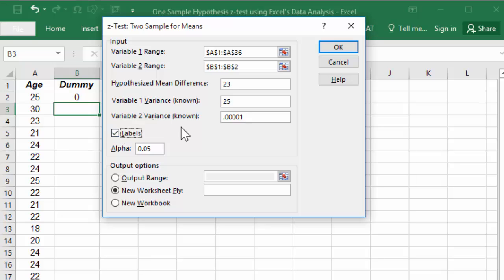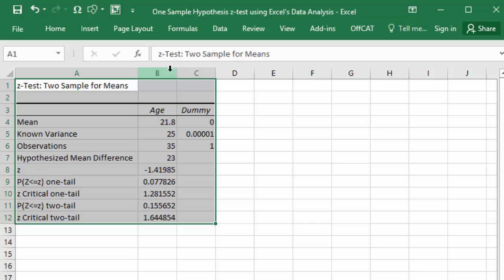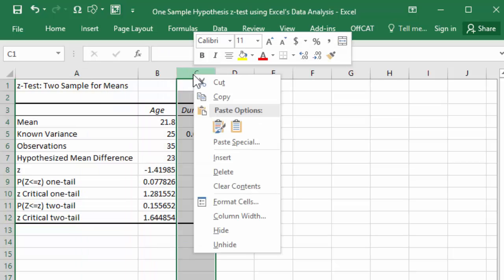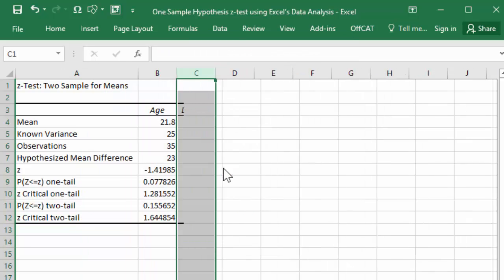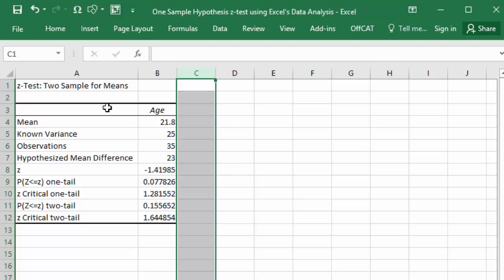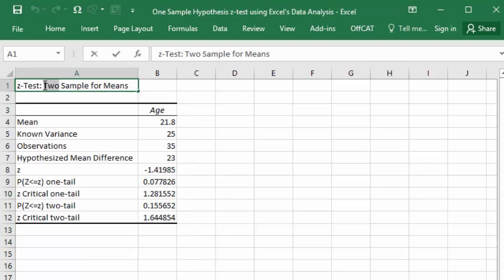I'm going to check labels because I selected the labels. For the significance level alpha, I'm going to input 0.10 here and then click OK. And here is the output on a different sheet. I'm going to right click on the dummy column here and delete because we don't need it. I'll change the title to one sample.